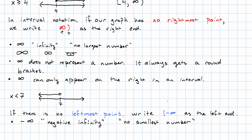Like positive infinity, negative infinity is not a number. It cannot be included in an interval. It always gets the round bracket. And, it can only appear on the left in an interval.